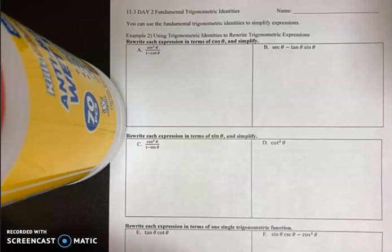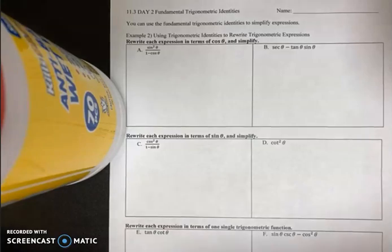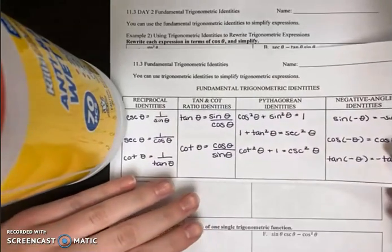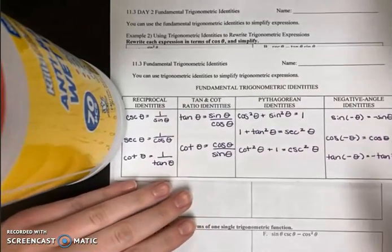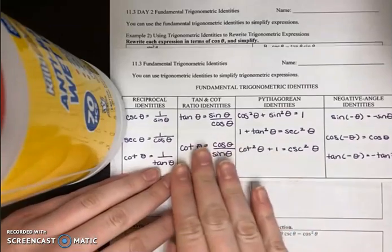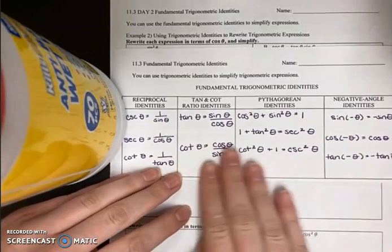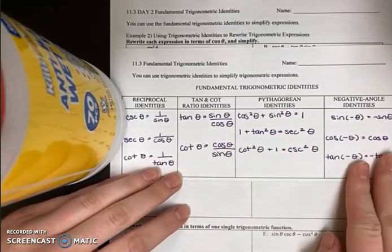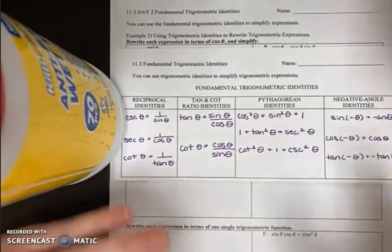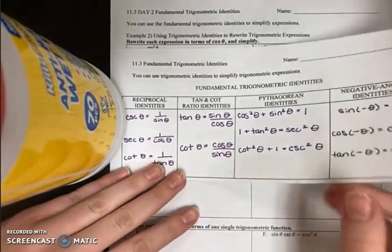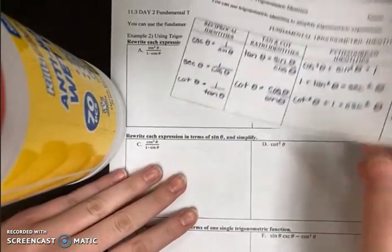For today's notes, you're going to need to pull out your 11.3 day one notes and homework to help you. Basically, what I need you to be looking at is our fundamental trigonometric identities while we're going through and trying these problems.